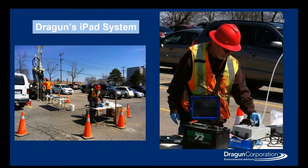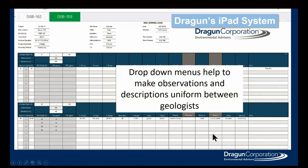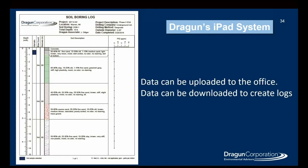We're going to move on to Dragan's iPad system. We saw some examples earlier of handwritten environmental logs, but at Dragan, several years ago, we moved on to an iPad system. This has all the same information we were getting from paper, but it also helped us be more uniform in our classification between different geologists. It has different drop-down menus with keywords and descriptors to describe the soil. Regardless of who goes out into the field, we have a similar soil boring when we come back. The data is collected in the field, uploaded in the office, and soil boring logs can be generated very quickly and accurately.